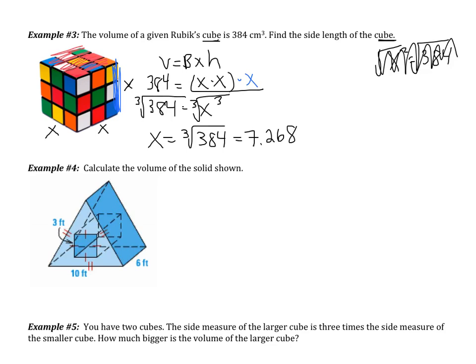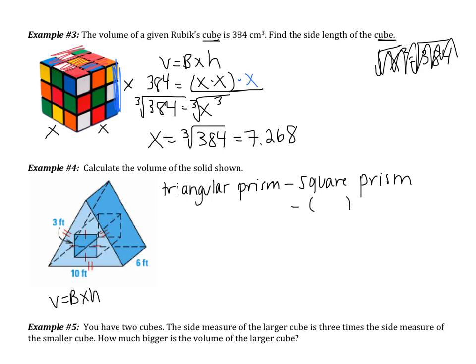Example number 4: calculate the volume of the composite solid shown. It's two solids combined — a triangular prism with a square prism cut out from it. We'll find the volume of each and subtract. Starting with the square prism: the base is a square with side length 3, so the area of the base is 3 times 3. The height of the prism is 6, the distance between the two square bases. So the volume of the square prism is 3 times 3 times 6, which equals 54.